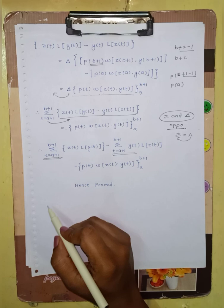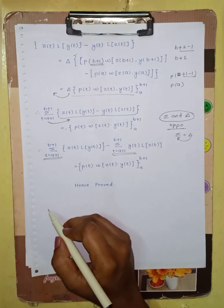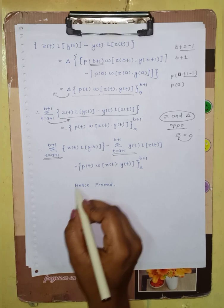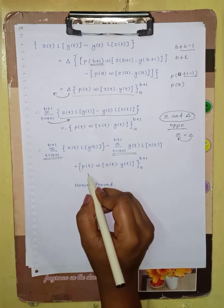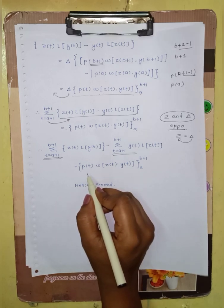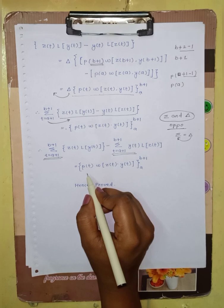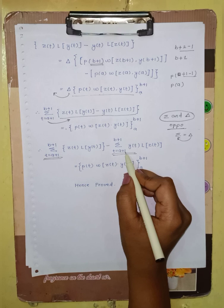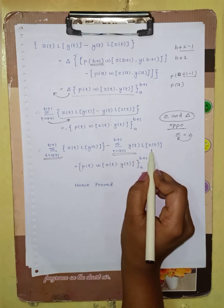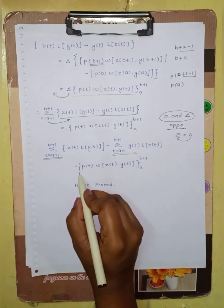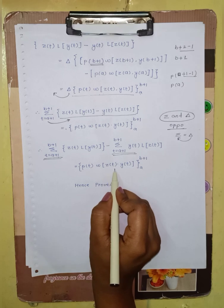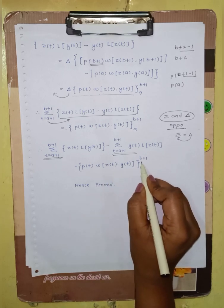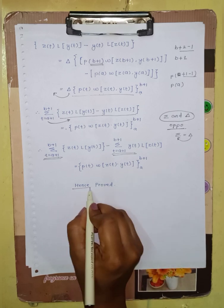Therefore we get the answer of our Green's theorem, and we have proven that the summation from t = a+1 to b+1 of z(t)·L[y(t)] minus summation of y(t)·L[z(t)] equals p(t)·ω(z(t), y(t)) with limits a and b+1. Hence proved.